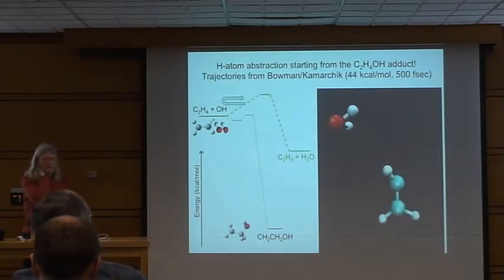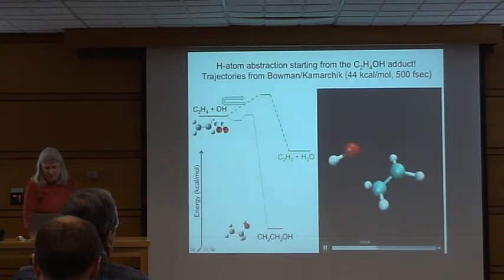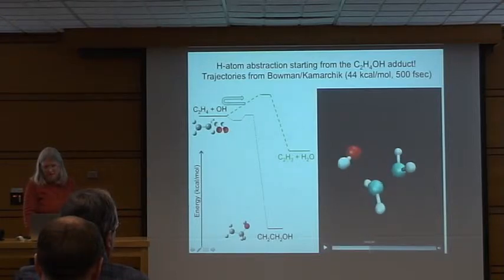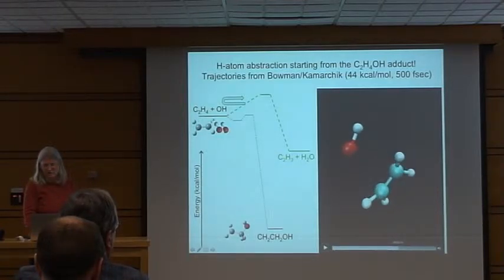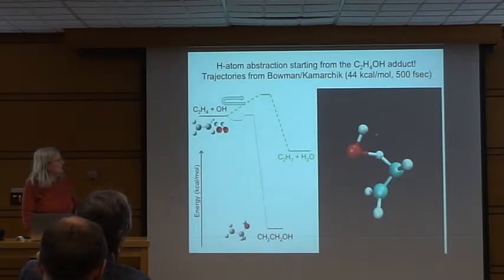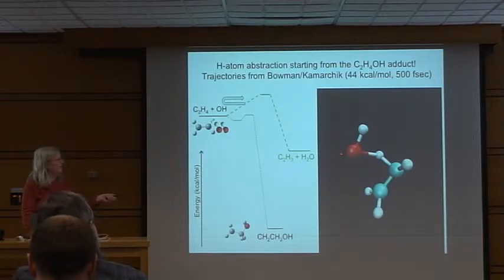If you look at the instant in time, it's almost collinear — carbon, hydrogen, oxygen — the H atom being transferred to the oxygen. The standard transition state for OH abstracting a hydrogen atom is collinear. So this trajectory is finding a region of the potential surface that looks just like the abstraction transition state, but finding it from this radical. It's not going over the 74 kcal/mol barrier. It's finding a non-intrinsic reaction coordinate path, and this is the dominant reactive channel — this is where the vinyl is coming from.